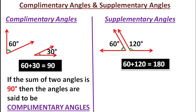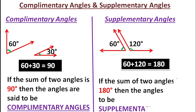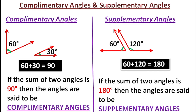The angles whose sum is 180 degrees are called supplementary angles. The supplement of 60 is 120, and the supplement of 120 is 60 degrees. If the sum of two angles is 180 degrees, then the angles are said to be supplementary angles.